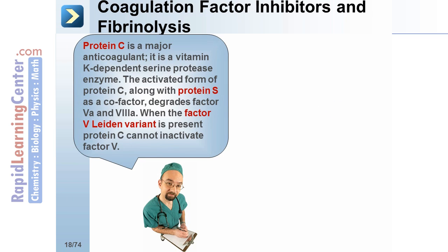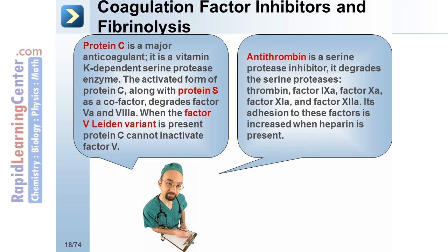Protein C is a major anticoagulant. It is a vitamin K-dependent serine protease enzyme. The activated form of protein C, along with protein S as a cofactor, degrades factors Va and VIIIa. When the factor V Leiden variant is present, protein C cannot inactivate factor V. Antithrombin is a serine protease inhibitor. It degrades the serine proteases, which include thrombin, factor IXa, factor Xa, and factor XIa. Its adhesion to these factors is increased when heparin is present.